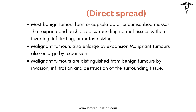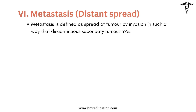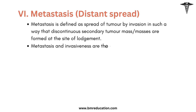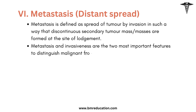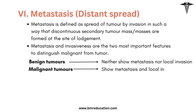The next feature is metastasis. Metastasis is defined as the spread of tumor by invasion in such a way that discontinuous secondary tumor masses are formed at the site of lodgment. Metastasis and invasiveness are the two most important features to distinguish malignant from benign tumors. Remember that benign tumors neither show metastasis nor local invasion, but malignant tumors show both — there are some exceptions.